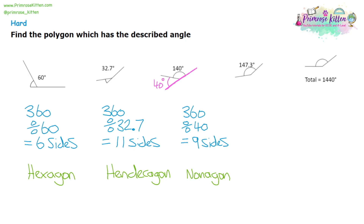For question four, we also have an interior angle. I'm just going to extend the diagram to show the exterior angle as well. Using a calculator: 180 take away 147.3 gives me 32.7 degrees — that's the size of the exterior angle. And look at that — we've already done that question. 32.7 was the exterior angle we had for the 11-sided shape, the hendecagon. So we're going to have exactly the same answer and exactly the same working.